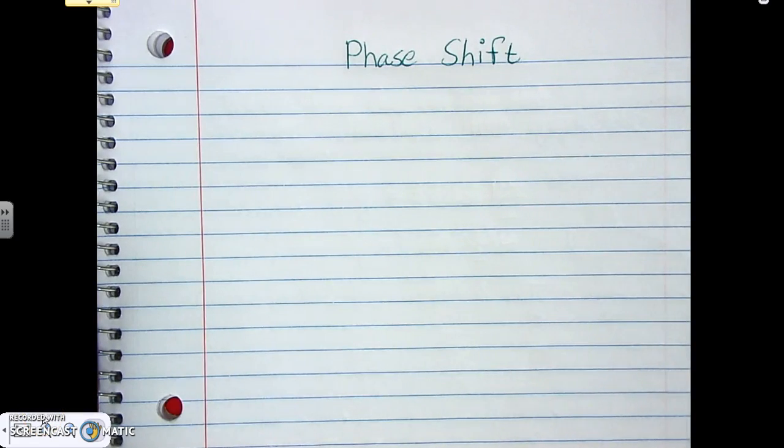Alright, so phase shift is the last transformation. There's only those four. So amplitude, vertical shift, period, and phase shift are the only transformations that are happening. So here, once we finish this, then we're done. That's all the transformations. There's no other transformations to do.